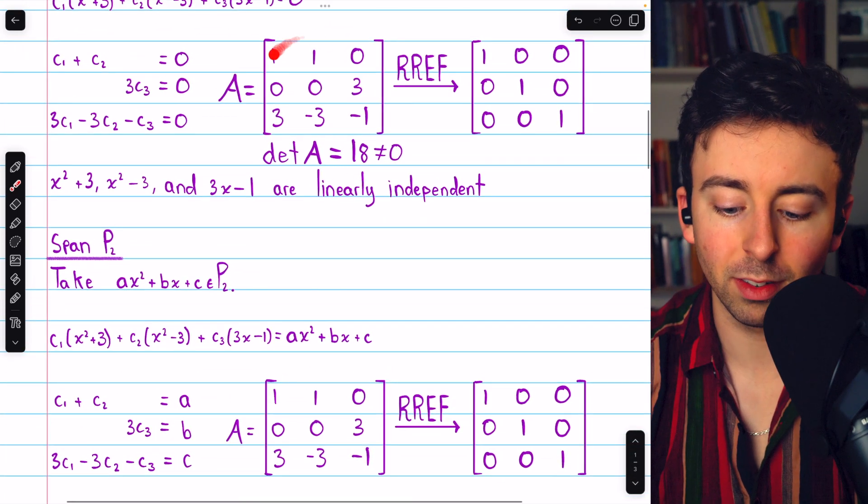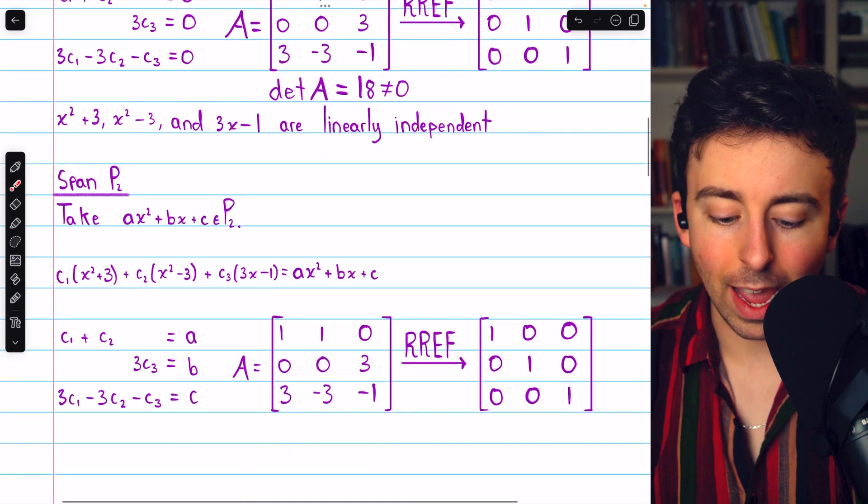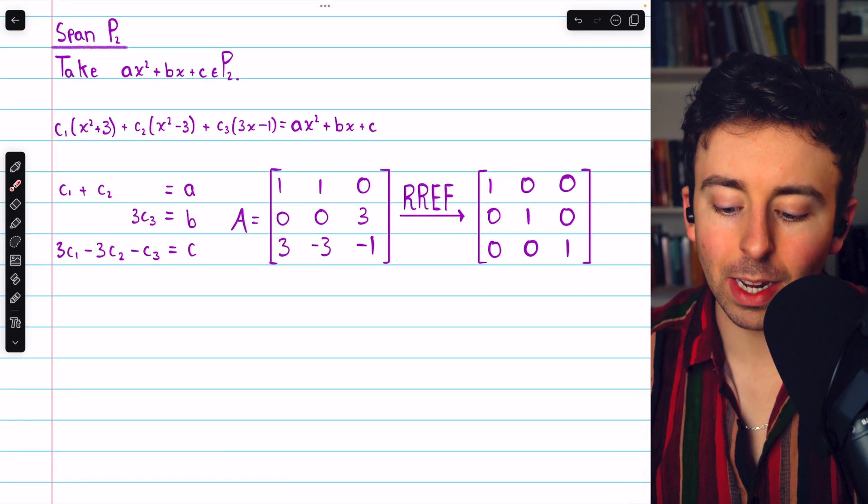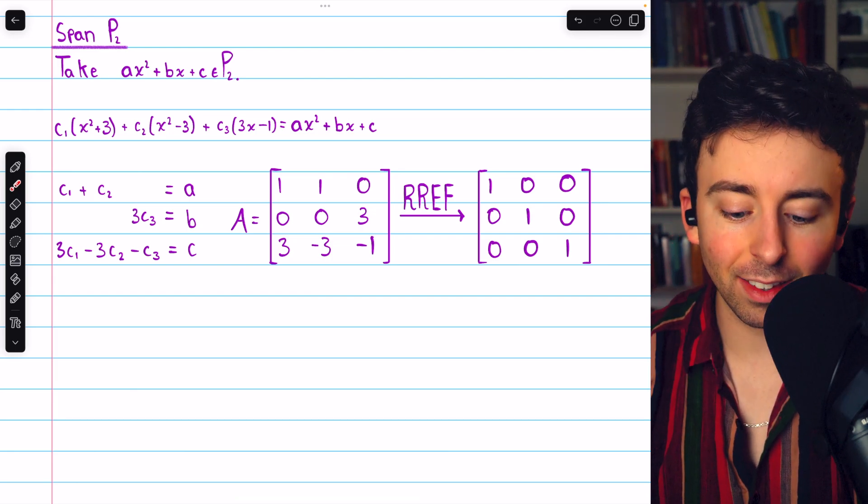it's the same exact coefficient matrix as the one that we just had. And if we perform Gauss-Jordan elimination on this, we get the identity matrix as its reduced row echelon form. Hence,